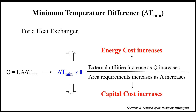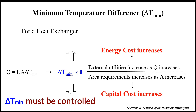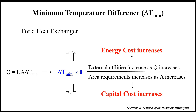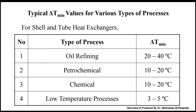When delta T minimum increases, this causes energy cost to increase. On the other hand, when delta T minimum decreases, the area of the heat exchanger increases to maintain the heat duty, meaning capital cost of the equipment increases. Therefore, delta T minimum should be kept at a certain value to compromise between energy cost and capital cost. For various types of processes, delta T minimum is taken by experience. For shell and tube heat exchangers, the typical delta T minimum values for various types of processes are indicated in this table.